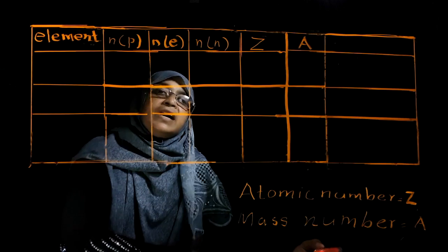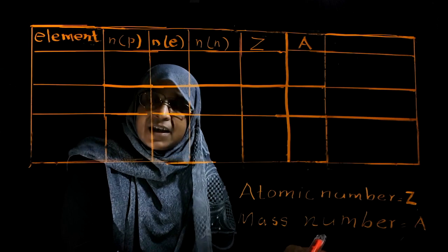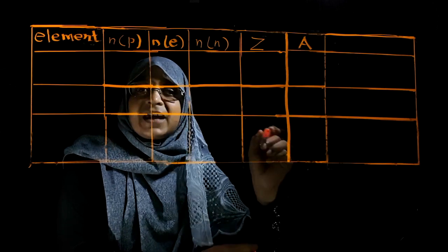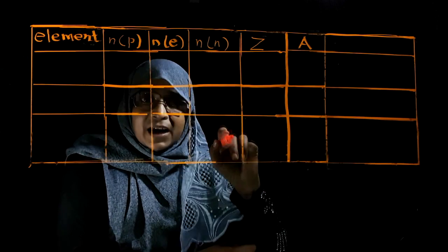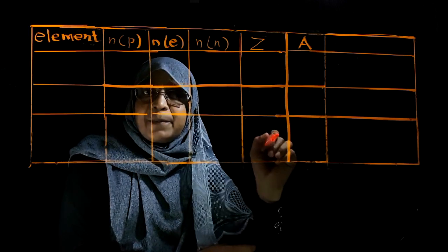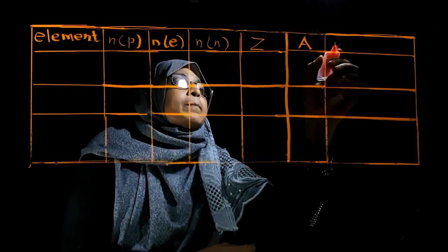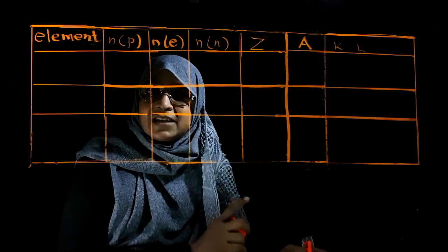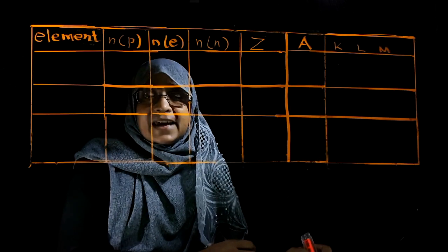The electronic configuration represents the way how the electrons fill in the energy levels from the nucleus outward. The energy levels from the nucleus are K, L, M, and N. The first energy level is called K, the second is L, the third is M, and the fourth energy level is N.